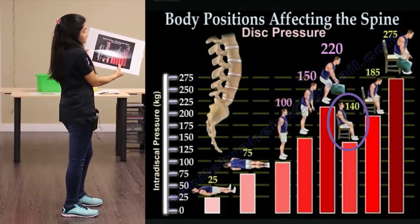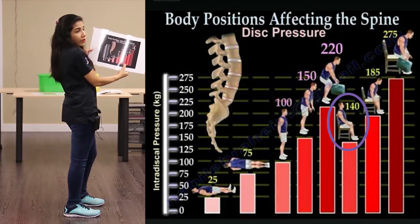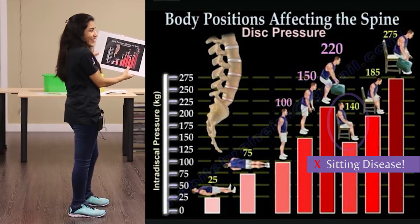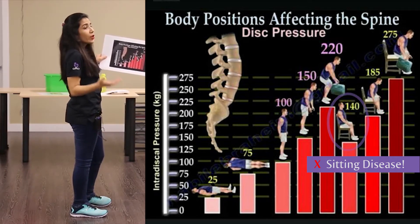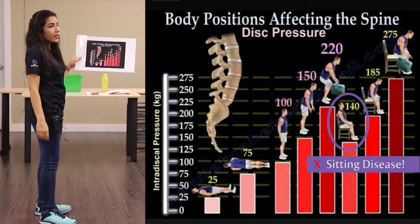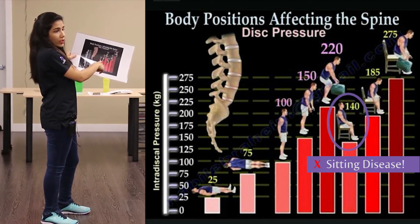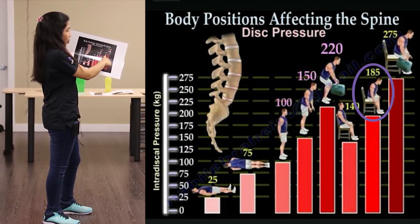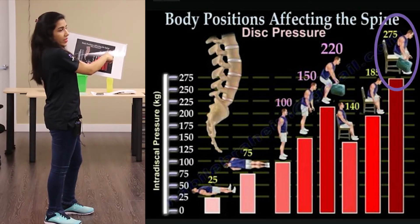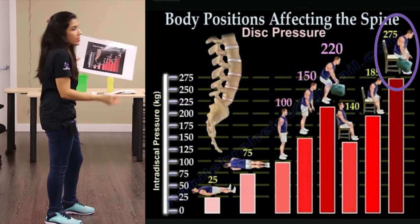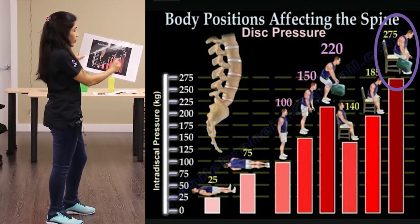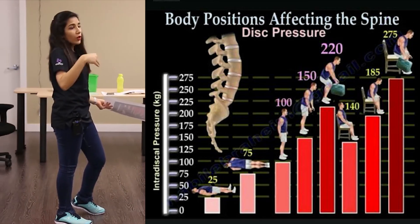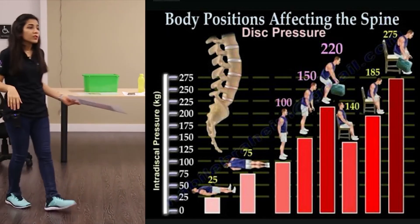Even when sitting, there is enough pressure on your disc, which is why we call it sitting disease. When you're doing an eight-hour desk job sitting down, that pressure is 140 — even more than when you're standing. Sitting and stooping is still more, and sitting and lifting a heavy weight is even higher. So you should know that even when sitting, your spine is still bearing a significant amount of weight.